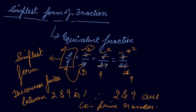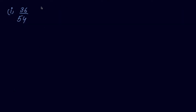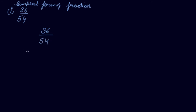Now, how do we find the simplest form of a fraction when given an equivalent fraction? We are given 36 by 54, and we need to convert it into the simplest form, which means we need to find fraction numbers that are co-prime to each other. The simplest way is to take out their HCF.